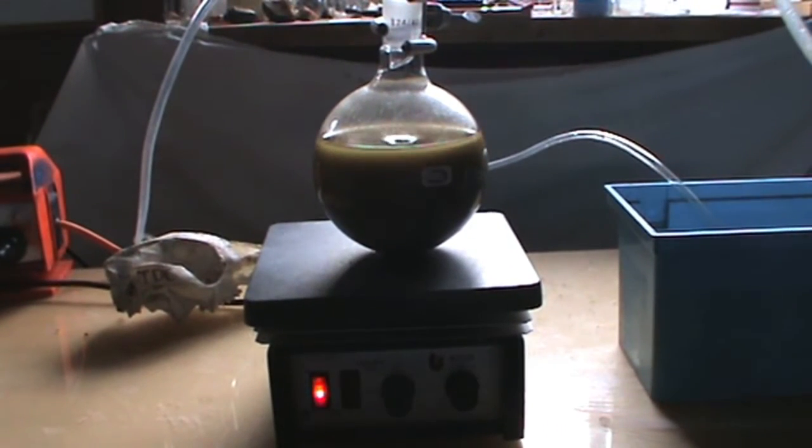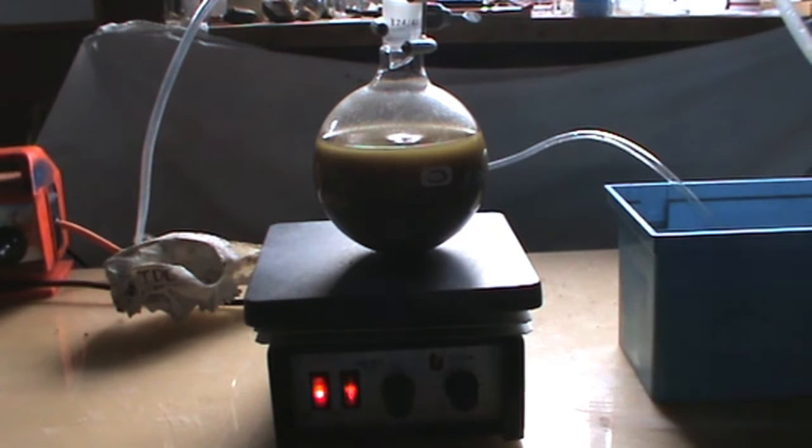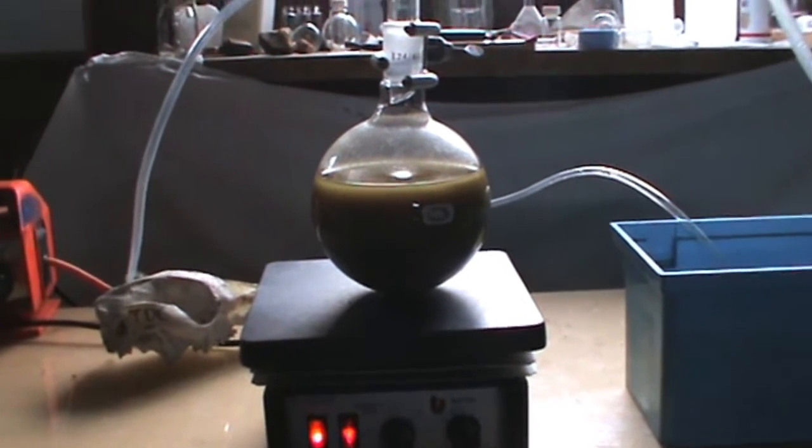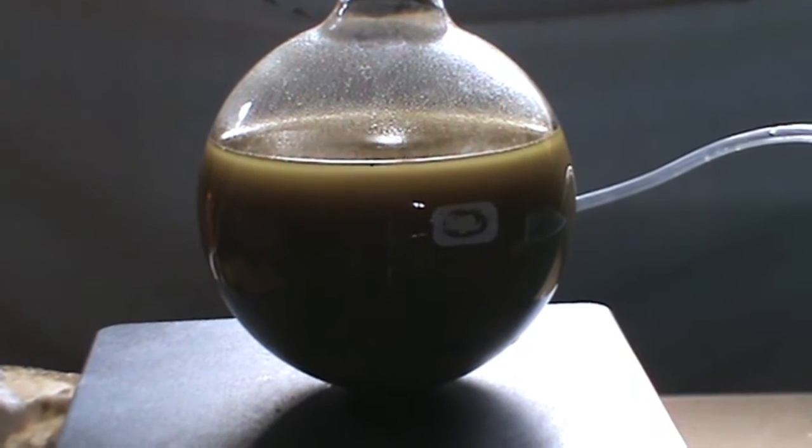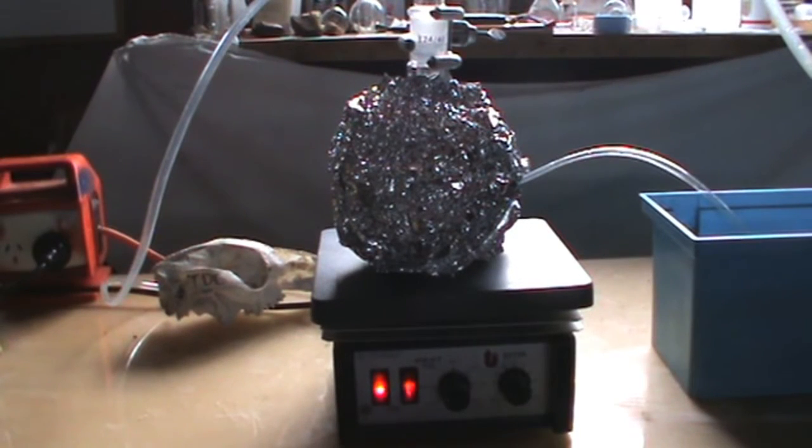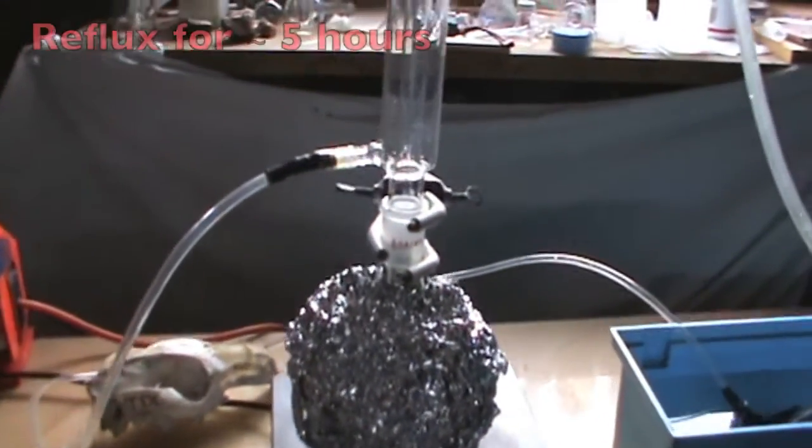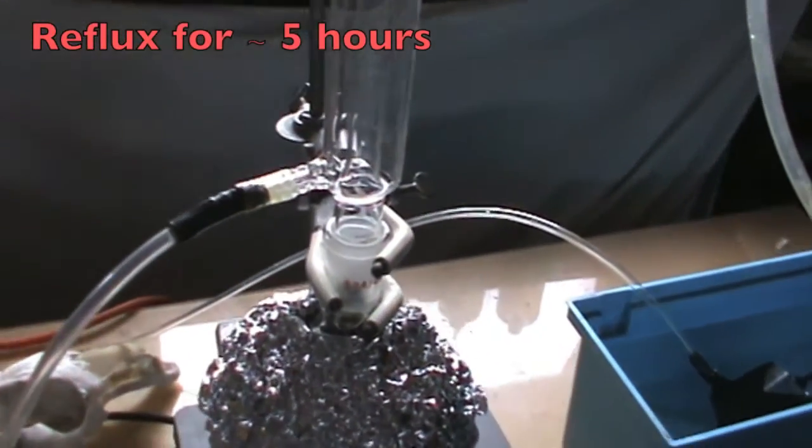Turn the heating on full. Also, make sure the stirring is on. For better heat distribution, wrap some aluminum foil around the round-bottom flask. Now reflux the mixture for about 5 hours.